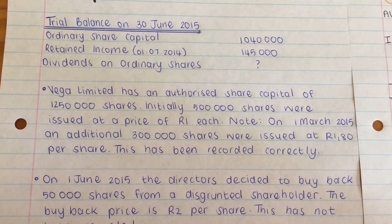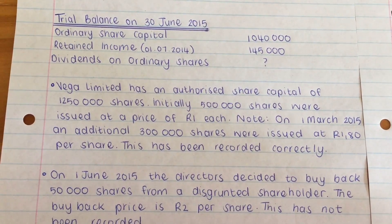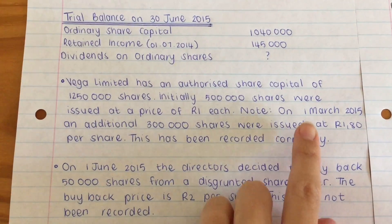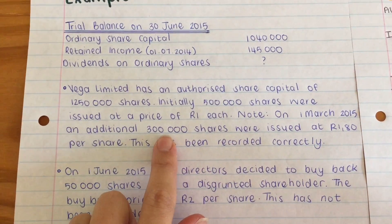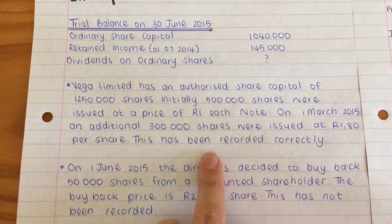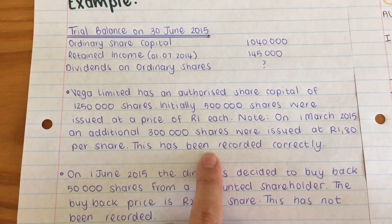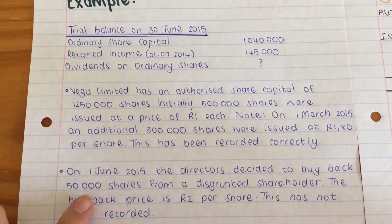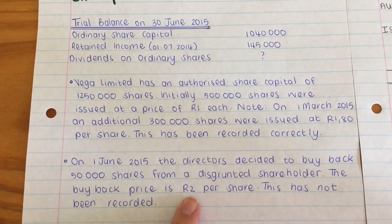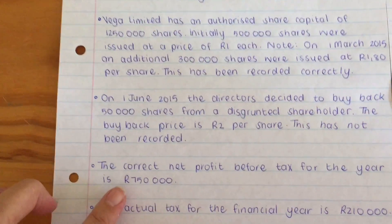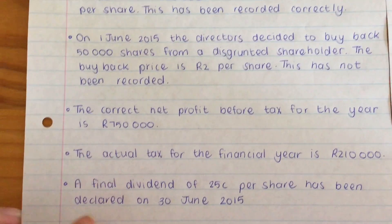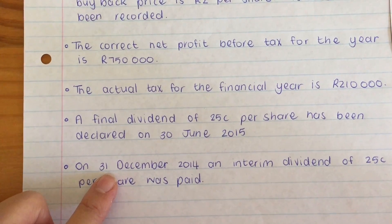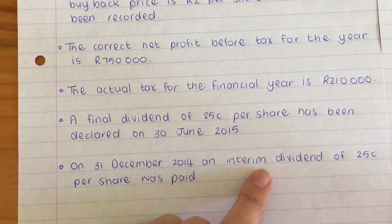Vega Limited has an authorized share capital of 1.25 million shares. They initially issued 500,000 shares at a price of one rand each, and then at the start of this financial year they issued 300,000 more shares at R1.80 — this has already been recorded. On the 1st of June, the directors decided to buy back 50,000 shares from a disgruntled shareholder and paid R2 per share. They give us the net profit before tax and the correct tax amount. A final dividend was declared on the last day of the year, and on the 31st of December an interim dividend was paid.